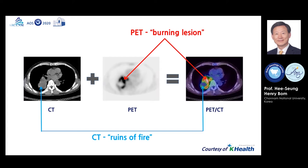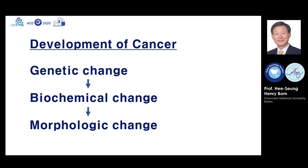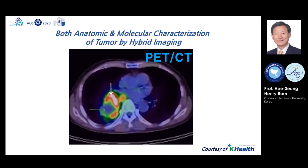Usually, genetic changes start first in carcinogenesis, followed by biochemical changes and then morphologic changes. PET or nuclear images represent biochemical changes, while CT or ultrasound represent morphologic changes. Both anatomic and molecular characterization of a tumor is possible by hybrid imaging such as PET-CT.